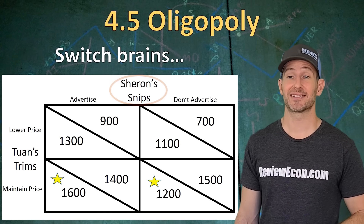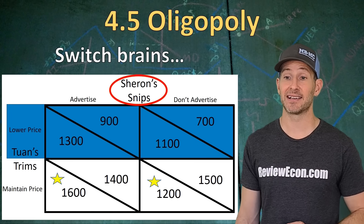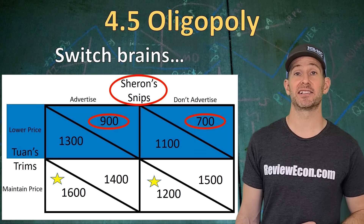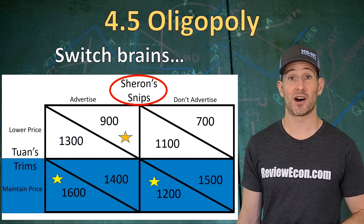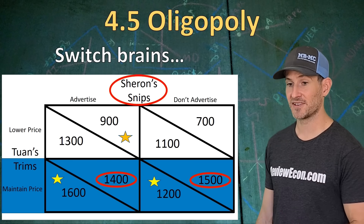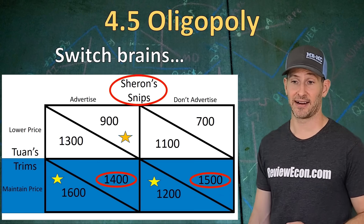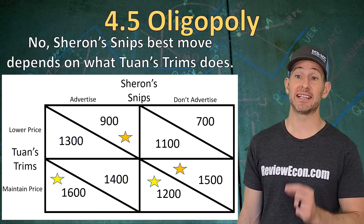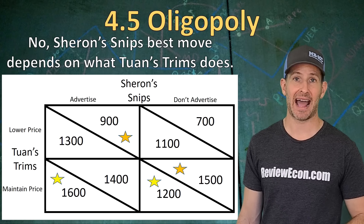Next, we switch to Sharon's Snips. When Sharon is deciding what to do, she has to consider the possibility that Twan lowers price. If he does that, Sharon is deciding between $900 profit and $700 profit — advertising is the best bet, bringing in $200 more than not advertising. If Twan's Trims maintains price, Sharon's Snips is deciding between $1,400 profit and $1,500 profit — $1,500 is clearly better. Does Sharon have a dominant strategy? In this case, no, because Sharon's Snips' best move depends upon what Twan's Trims does. As a result, Sharon's Snips does not have a dominant strategy.